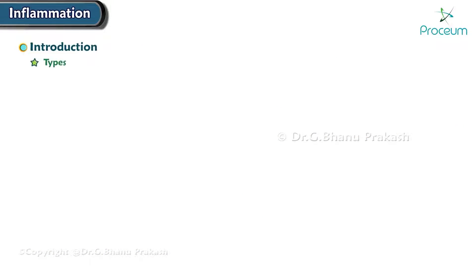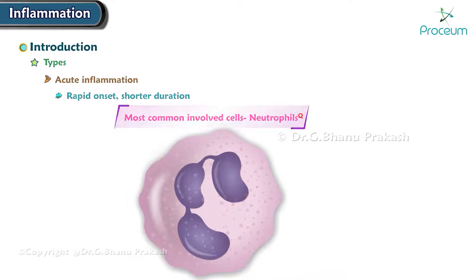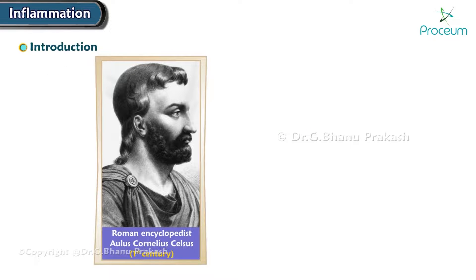There are two main types of inflammation. First is acute inflammation. This type is rapid in onset and of shorter duration. The most commonly involved cells with acute inflammation are neutrophils.